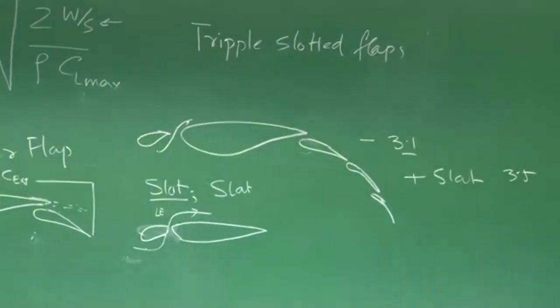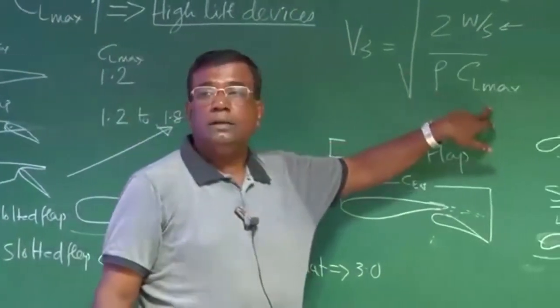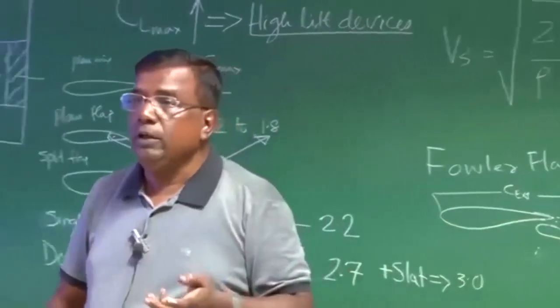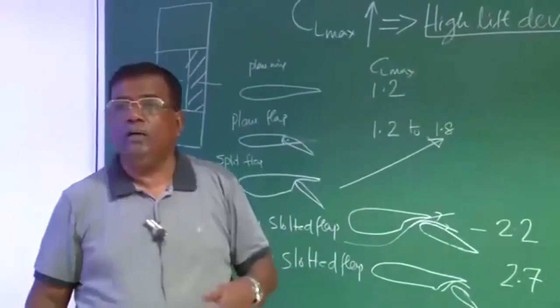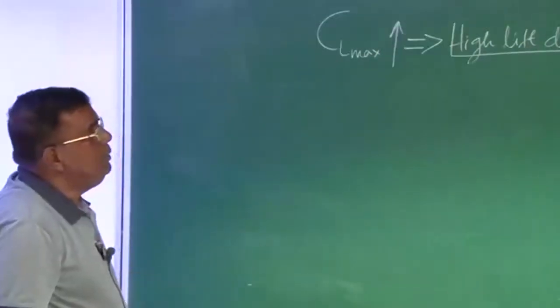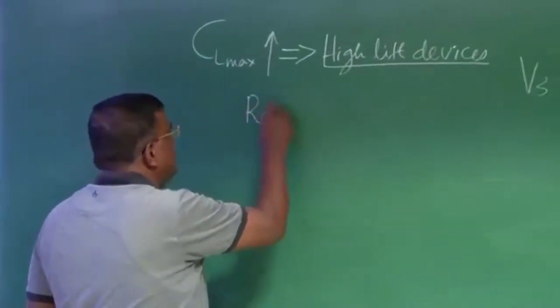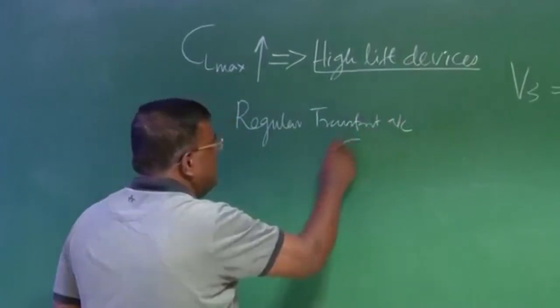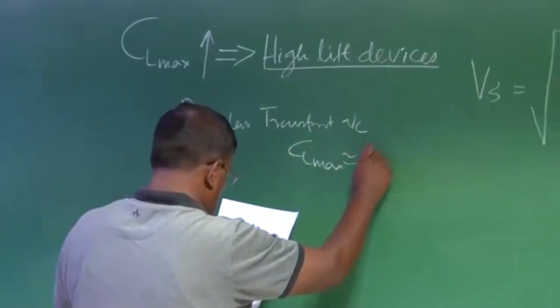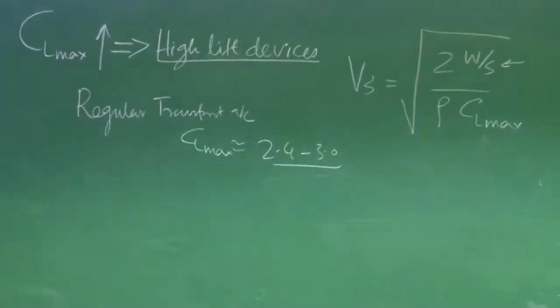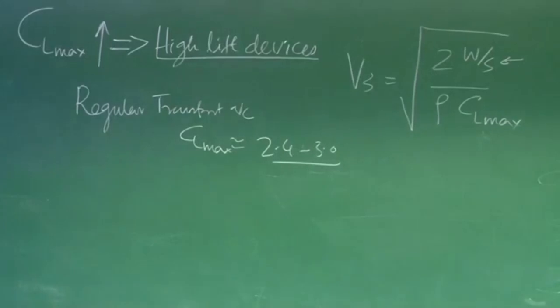So all these things, all these high-lift devices is going to affect CL max. And you can understand from 1.2 or 1.5, if you are going to 3, how much enhancement is there, because the V stall goes down. So V takeoff goes down, lift off distance goes down. That is very, very important. Just to give you a feel for numbers, this regular transport aircraft, the CL max is the order of around 2.4 to 3, around this. If you are designing a regional transport aircraft, I will recommend you assume CL max to be around 2.2 or 2.3 and then start calculation.